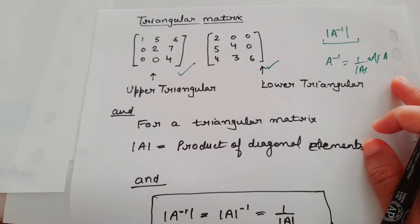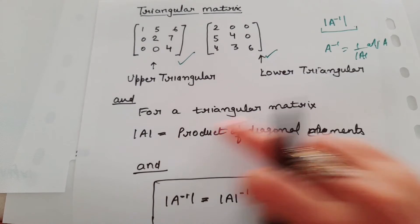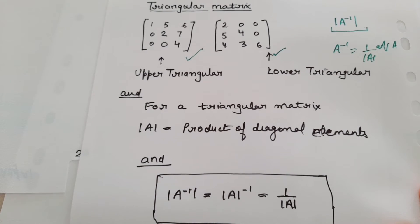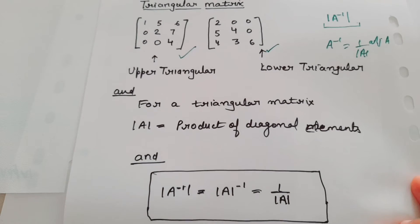You do not need to find adjoint of A. You just need to find determinant of A and that is quite easy for a triangular matrix as it is product of diagonal elements.